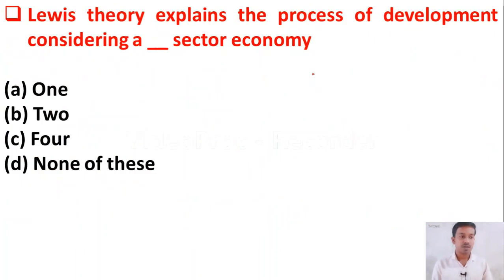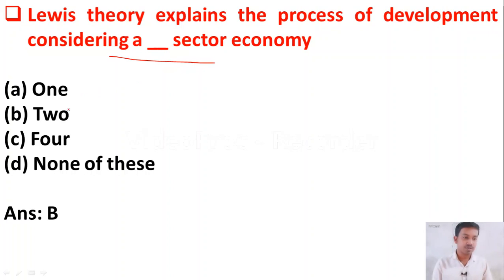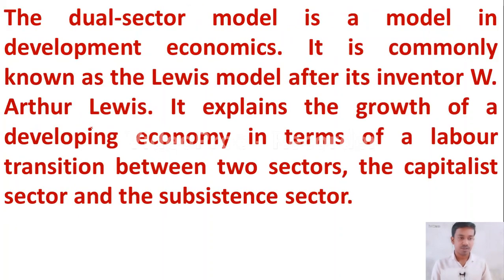The next question: Lewis's theory explains the process of development considering a dash-sector economy — one sector, two, four, or none of these? Lewis's theory of development is based on the two-sector economy: one is the capitalist sector and another is the subsistence sector.